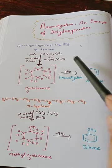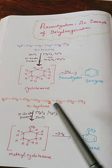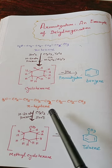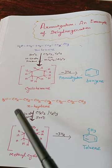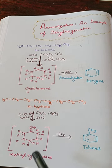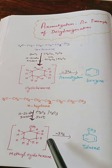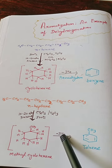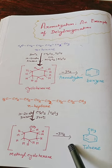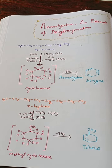Similarly, when we use N-heptane in the presence of the same reaction conditions, first cyclization takes place and we get methylcyclohexane. Then three molecules of hydrogen gas are released and aromatization takes place, and we get toluene.